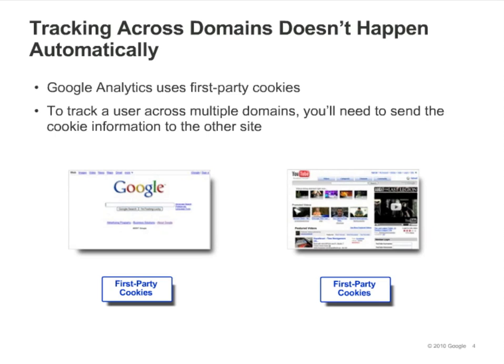You may sometimes need to track activity across multiple domains. A common example of this is when you send visitors from your site to a separate shopping cart site to complete their purchases. However, since Google Analytics uses exclusively first-party cookies, it cannot automatically track whether those visitors actually complete a purchase or not, because the purchase is taking place on another site. If a session spans multiple domains, it would not be possible to track the session as a single visit attributed to one visitor. So you'll need a way of sharing the cookie information between the two domains.